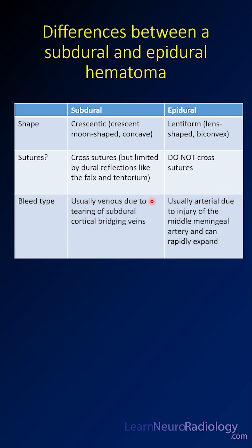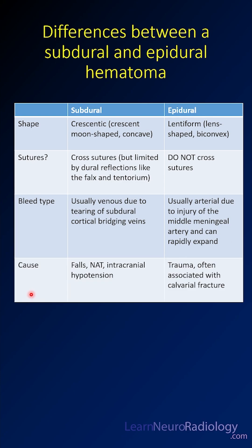Usually subdural hematomas are from venous hemorrhages because of tearing of subdural bridging veins. Epidural hematomas are usually due to injury of the middle meningeal artery or arterial branches.